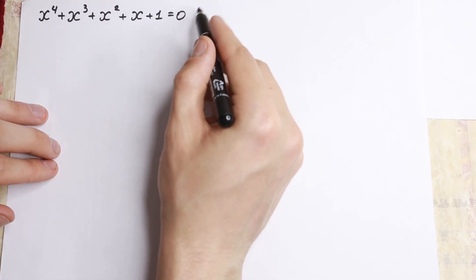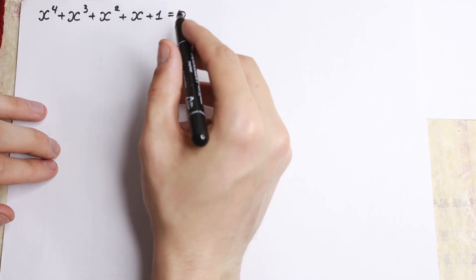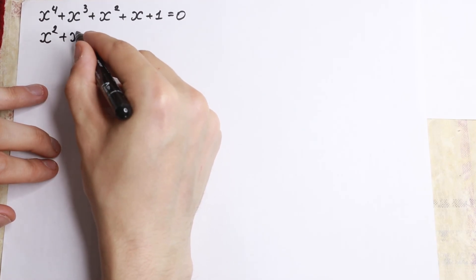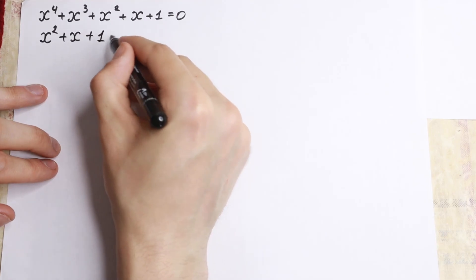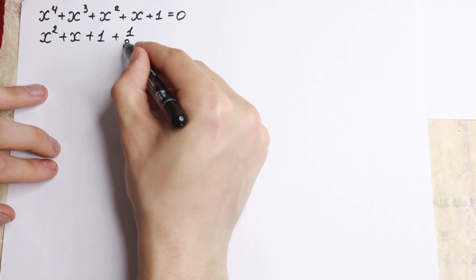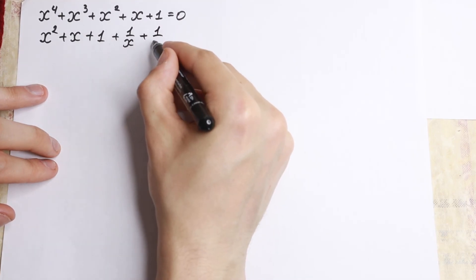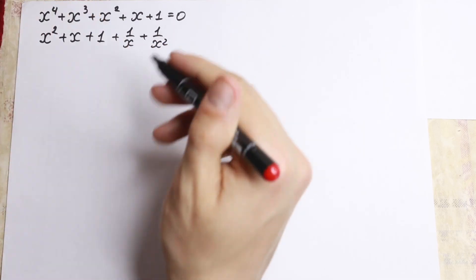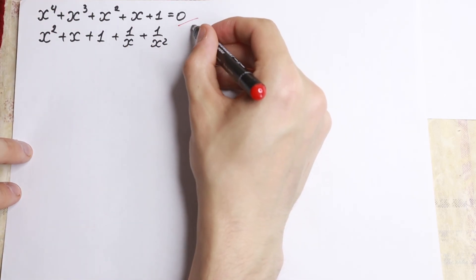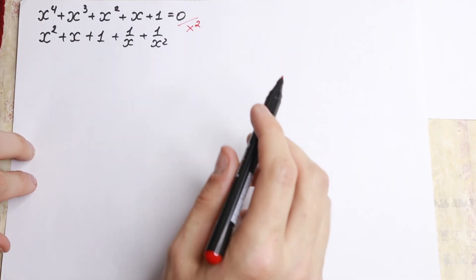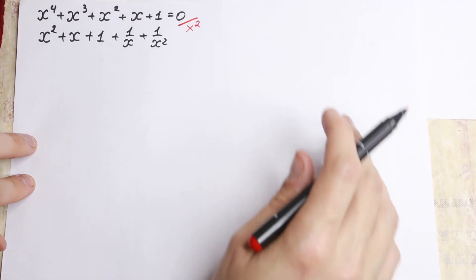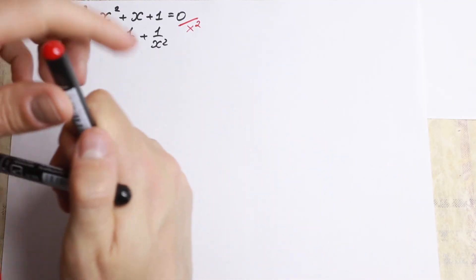Let's divide both sides by x squared. We will have x squared plus x plus 1 plus 1 over x and plus 1 over x squared, all equal to zero. So we just divide both sides by x squared.